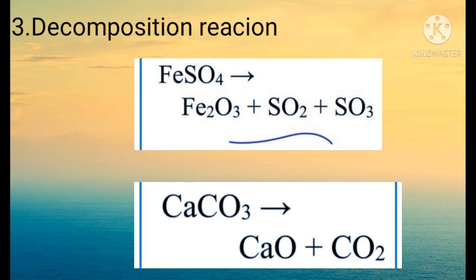The next example is calcium carbonate, which is called limestone or marble. On heating this limestone we get two products: quicklime (calcium oxide) and carbon dioxide gas. This reaction is a decomposition reaction because we get two products from only one reactant.